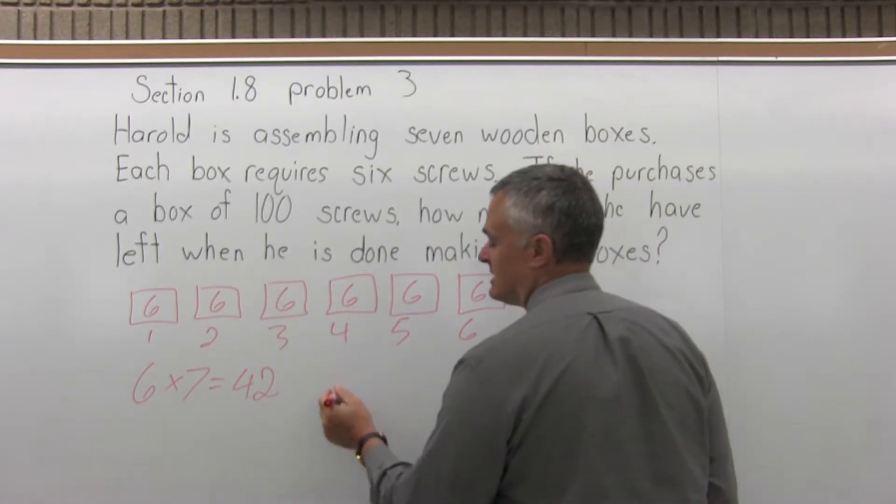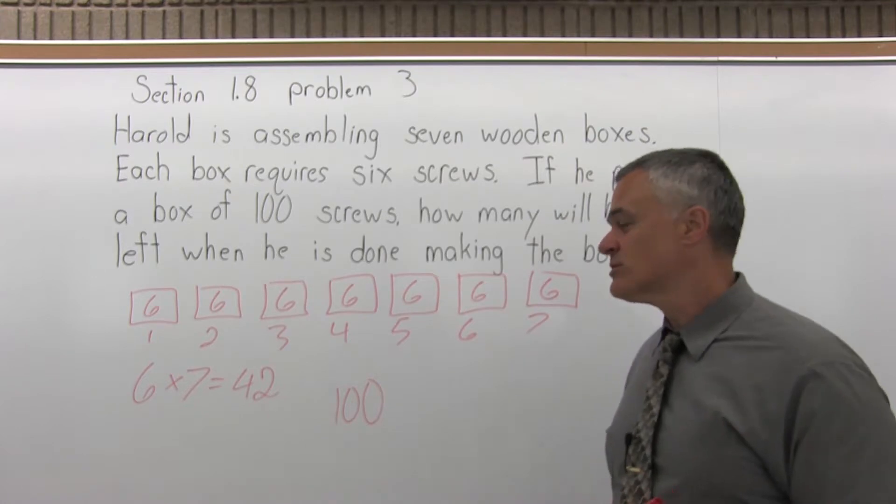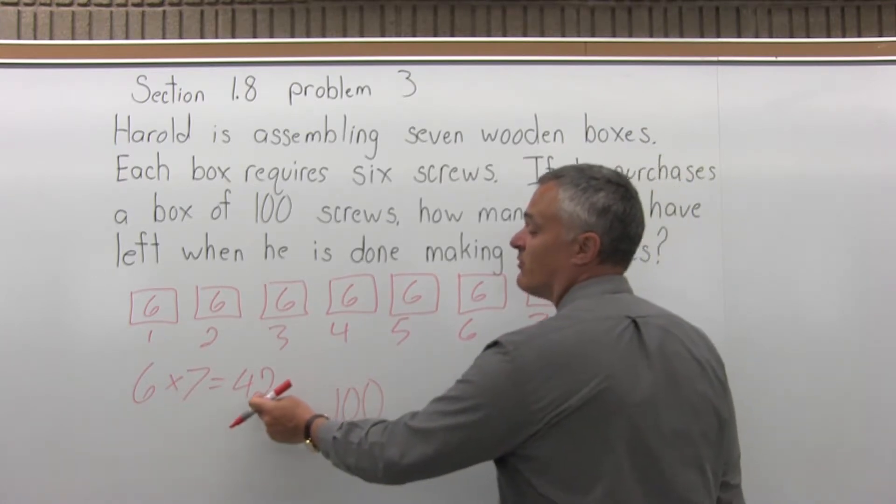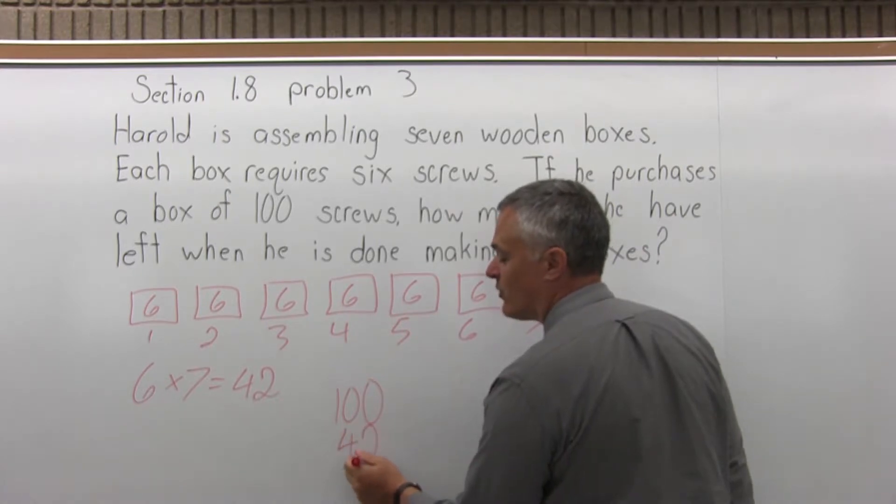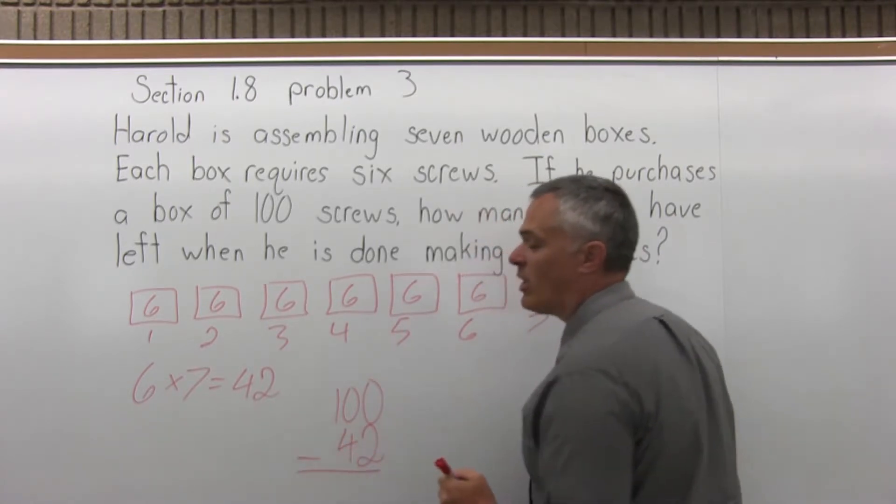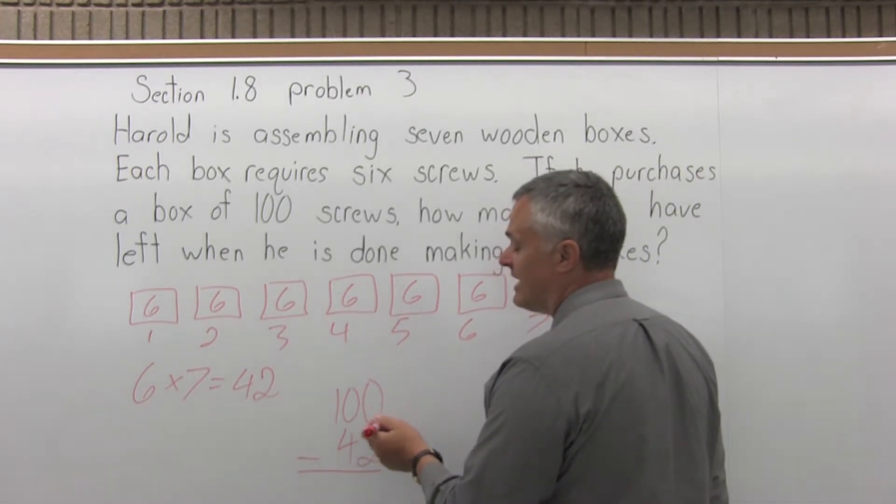Now, if he purchases a box of 100 screws, this is a small box of screws, and he will use up 42 of the screws to make the boxes. Let's subtract the 42 away from the 100 screws that come in the box, and you'll see that it should come out to 58.